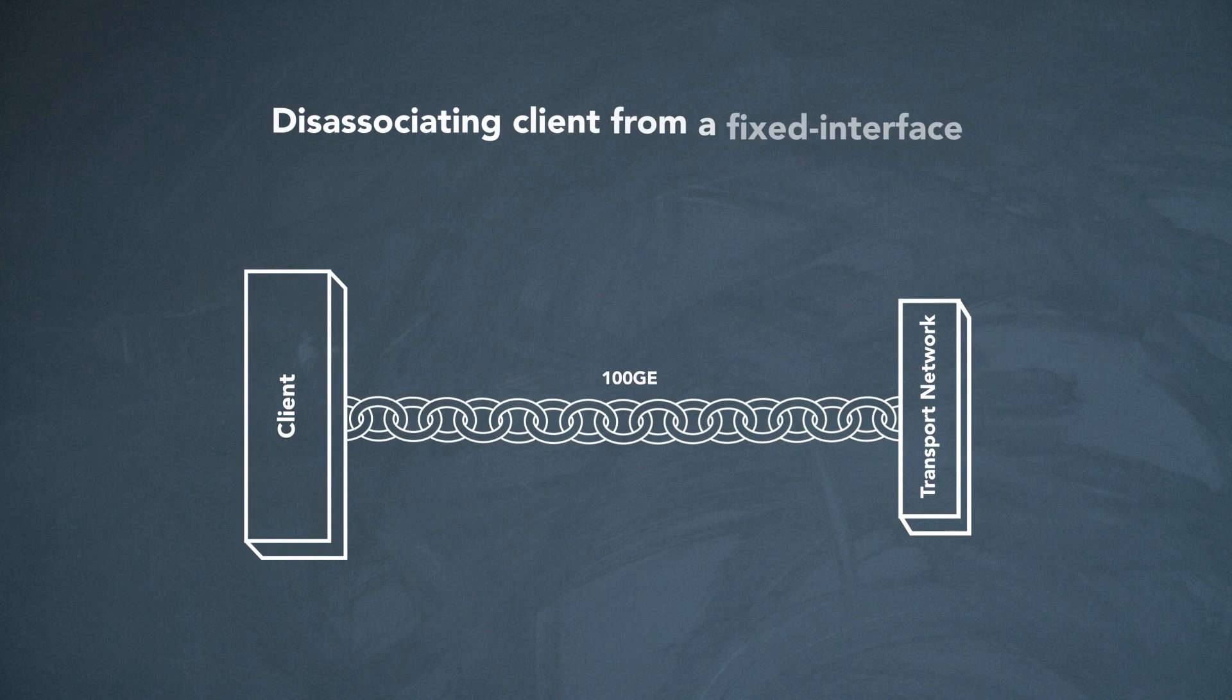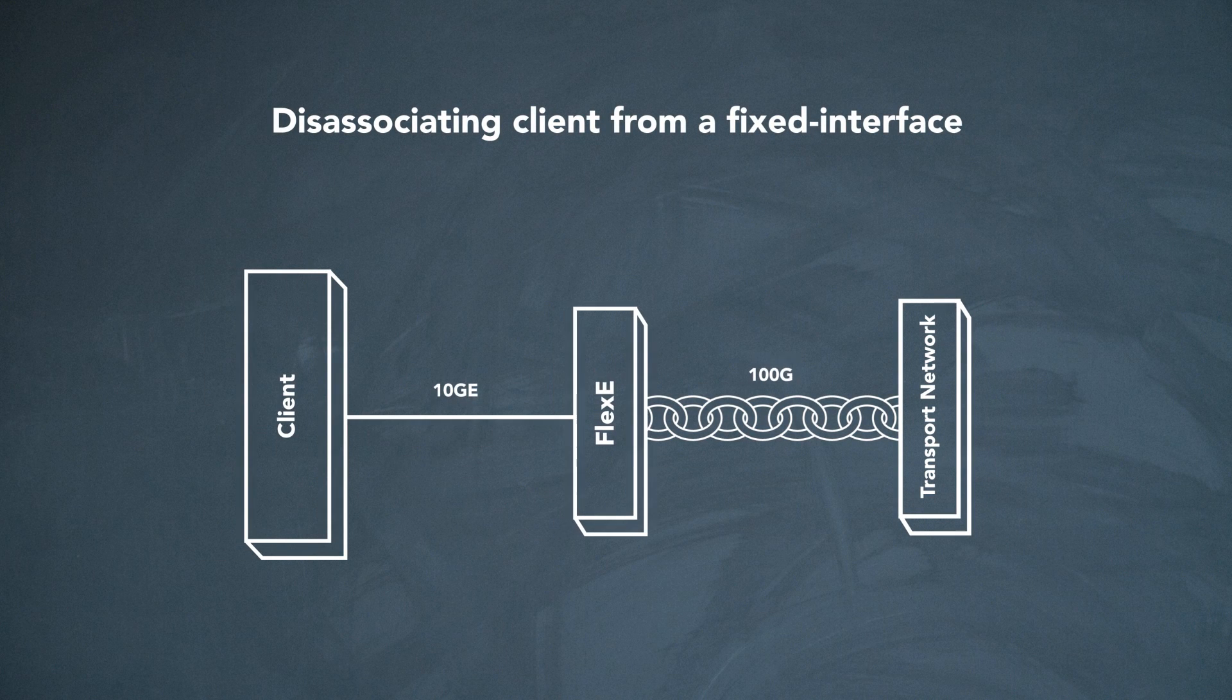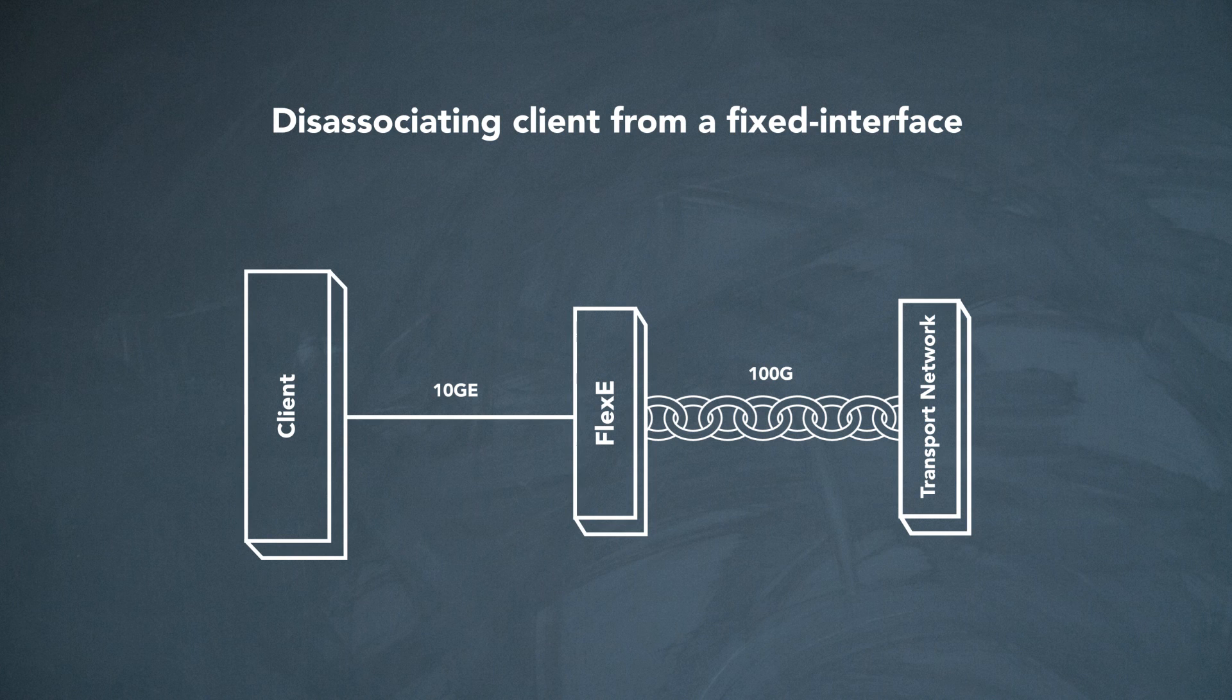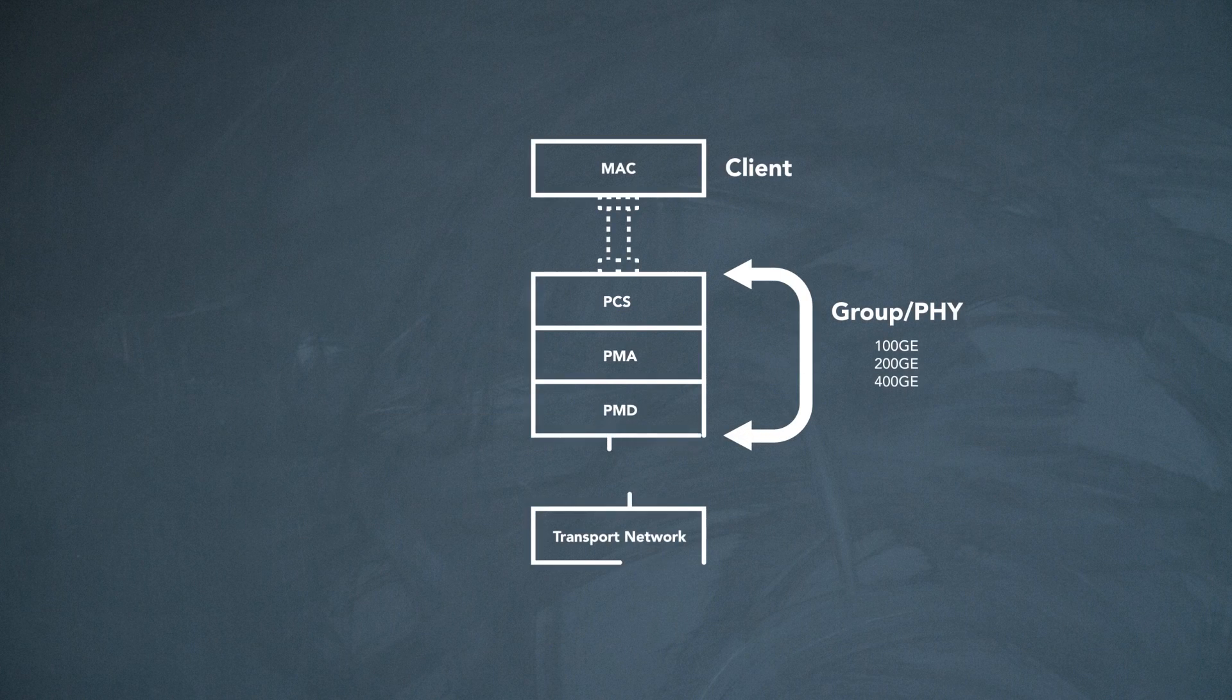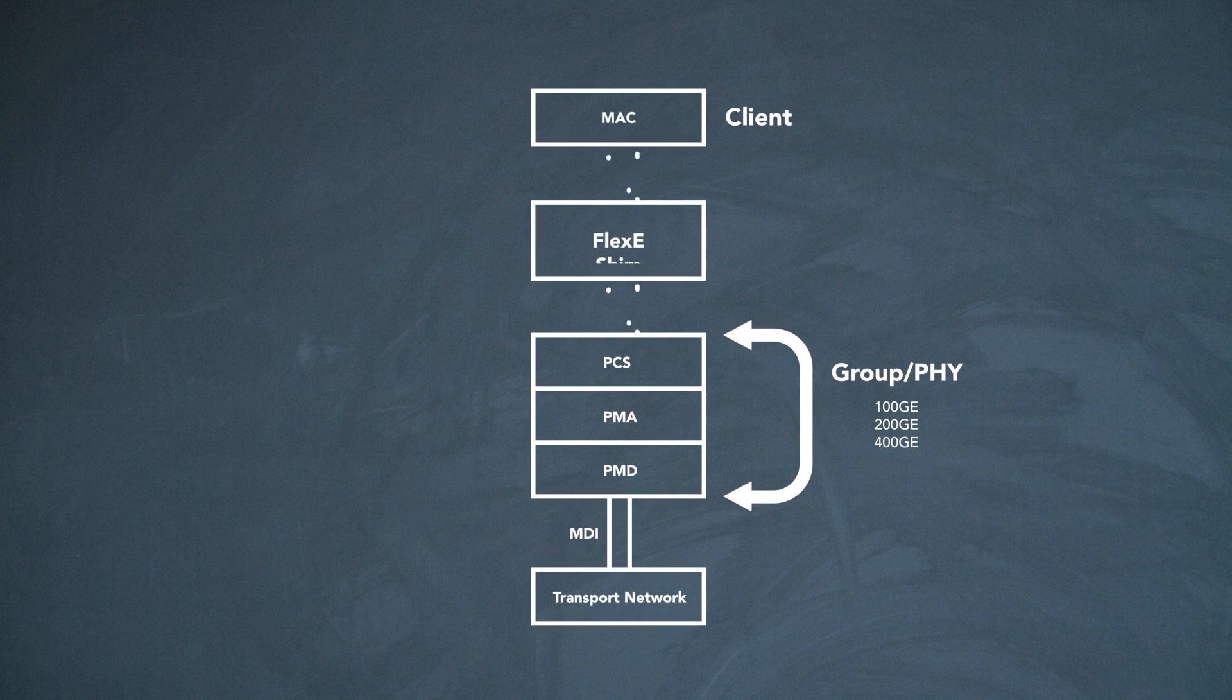FlexE tries to dissociate the client from the actual interface or server. How does it do this? FlexE introduces a new shim between the IEEE defined MAC and PCS layers.